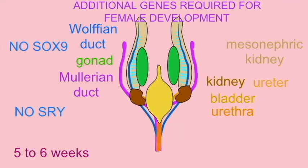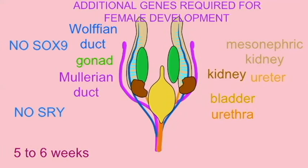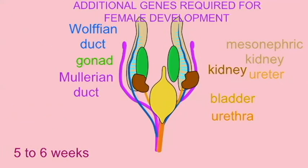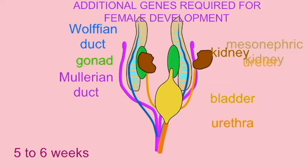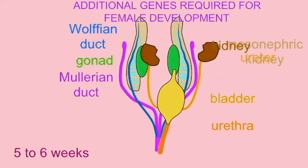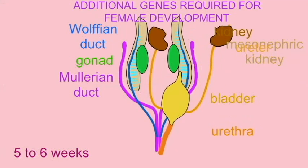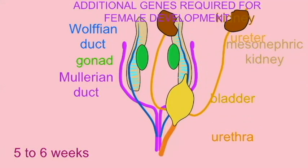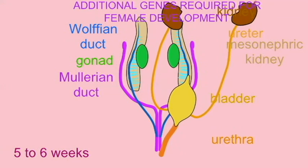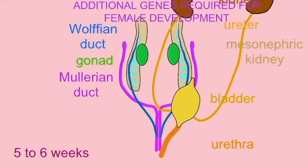If the bipotential gonad is not signaled by SRY and SOX9 to develop into a testis, it develops into an ovary by default, so ovarian development is, in many senses, the default programming of this gonad.